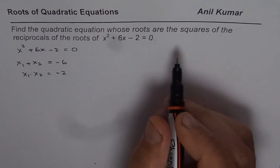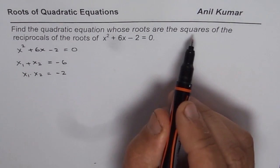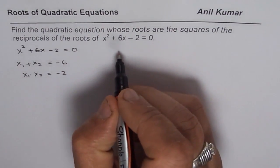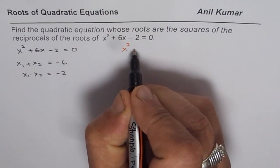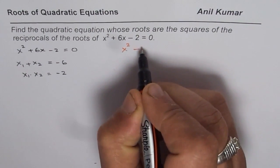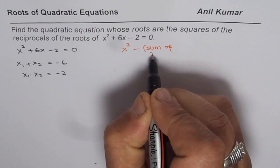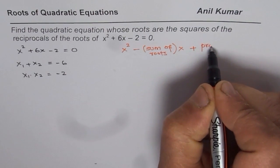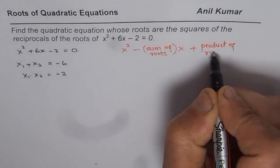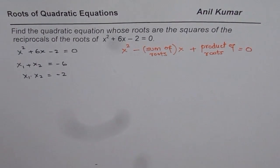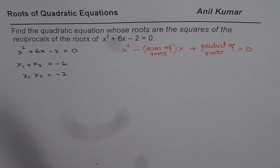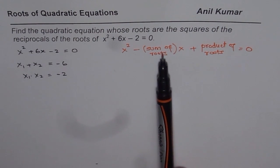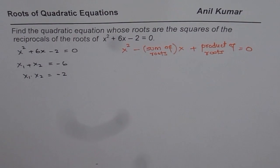Now we need to find another quadratic equation whose roots are squares of the reciprocal of the roots of this equation. The formula we use is: x squared minus (sum of roots) times x plus (product of roots) equals to 0. So we need to find the sum and product of roots of the new equation.